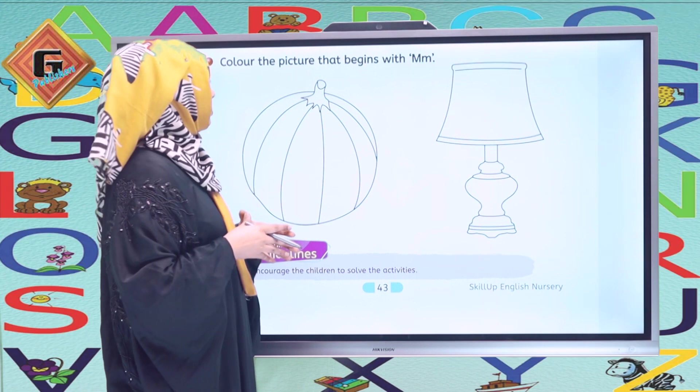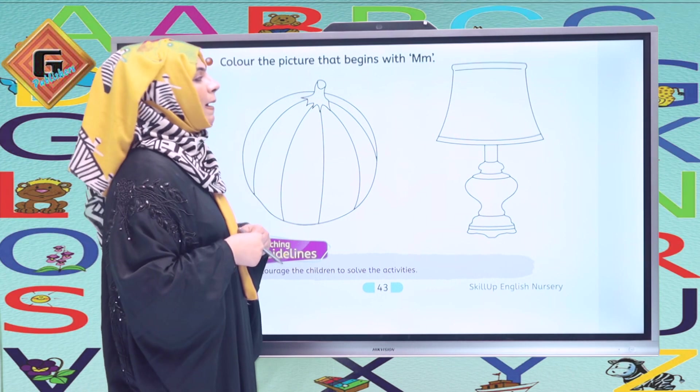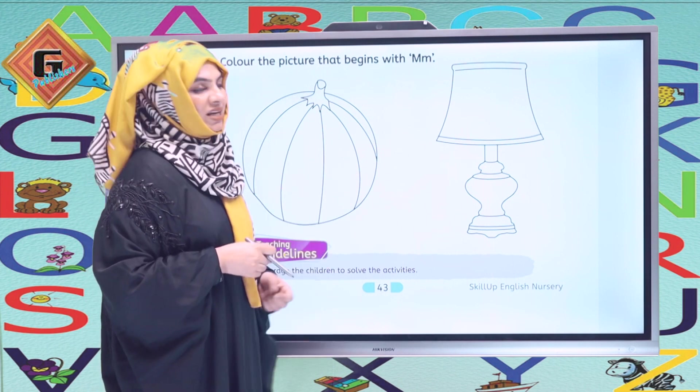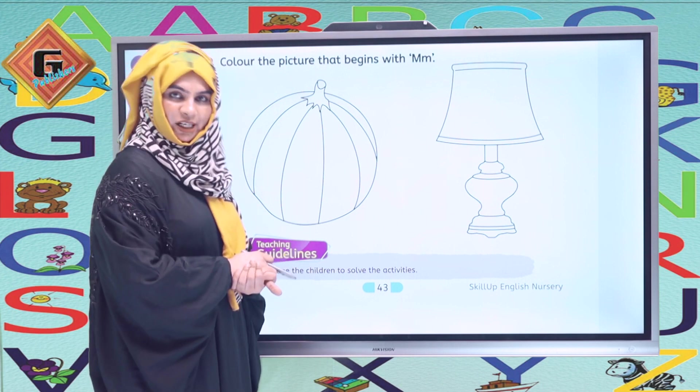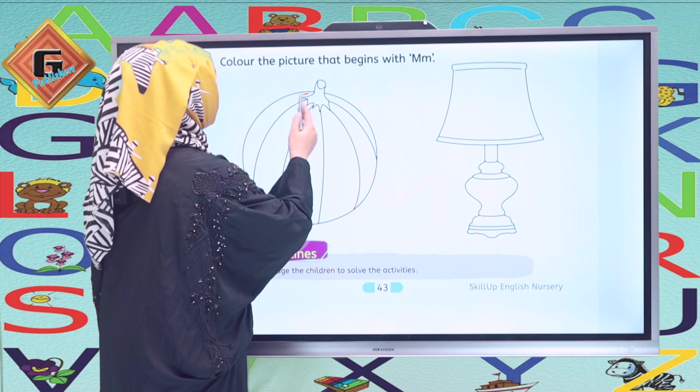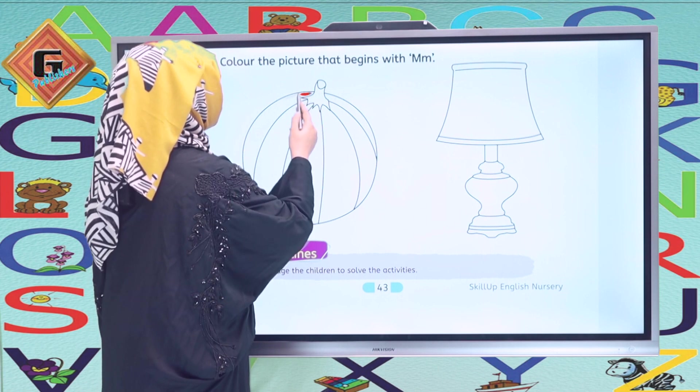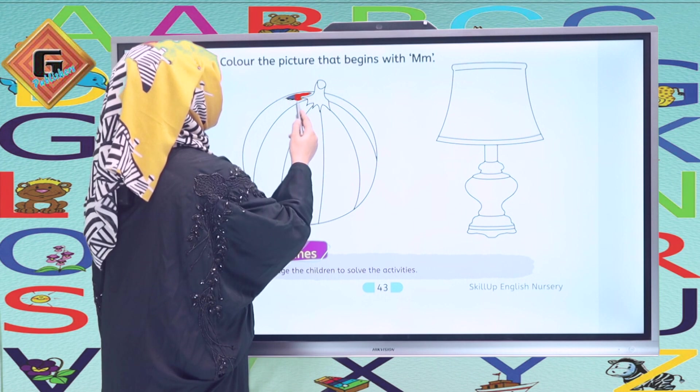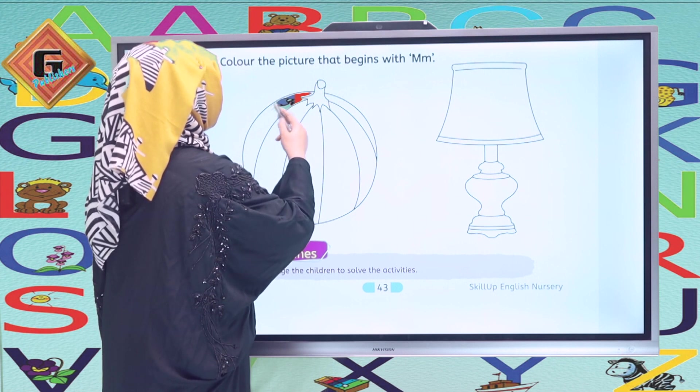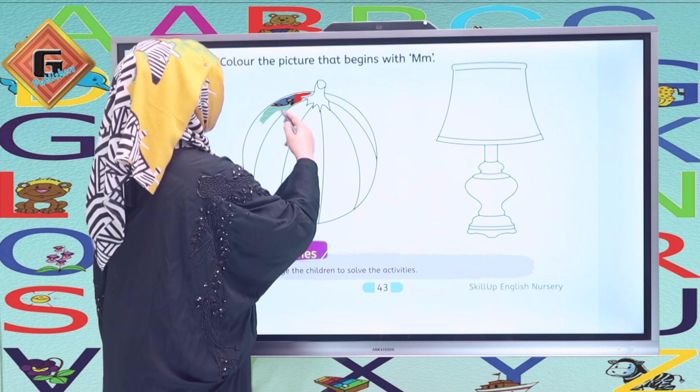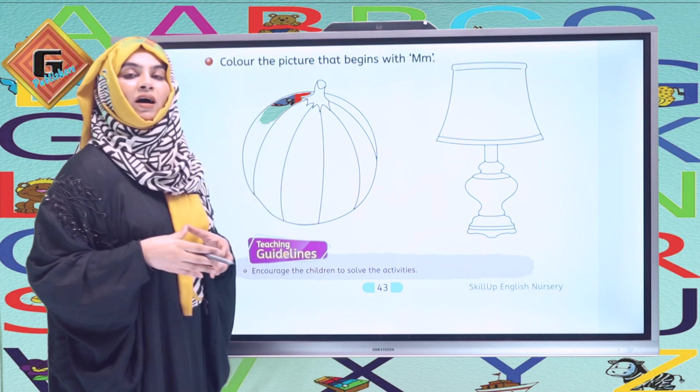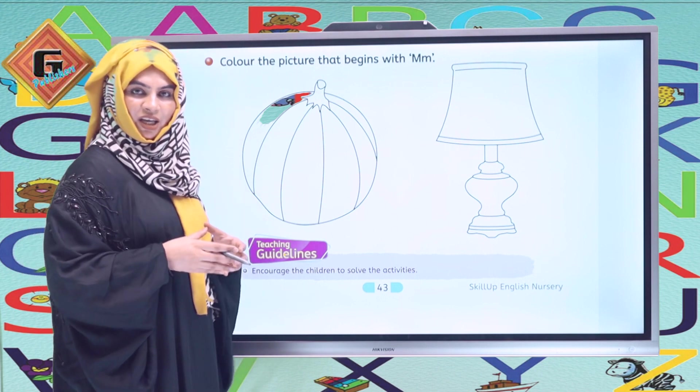The next activity is: color the picture that begins with M. We have two different pictures. The first one is melon and the next one is lamp. Which one will we color? We color the melon, that's right. What is the color of the melon? It's yellow. You have to remember boundaries and not color outside. Use nice strokes and fill the white spaces. Nicely done, coloring complete. Now we have teaching guidelines. Encourage your children to complete the activities.